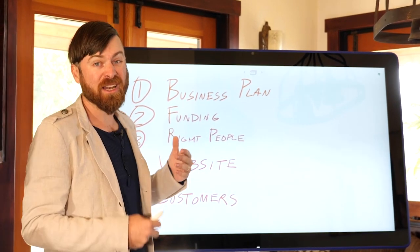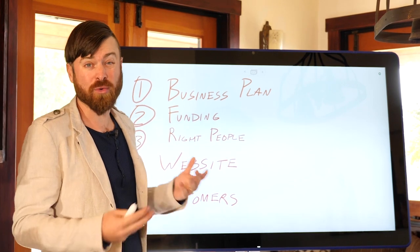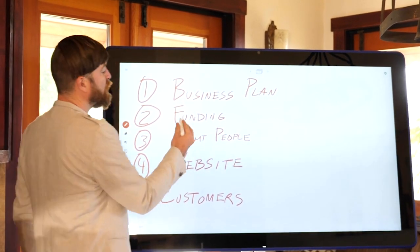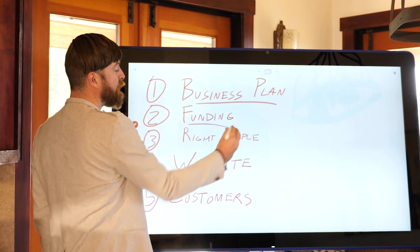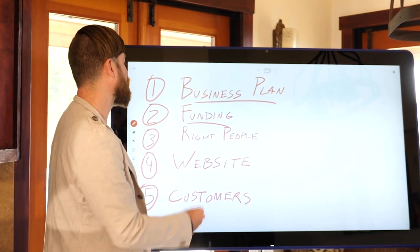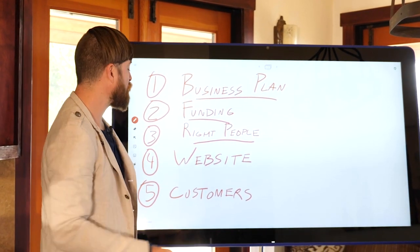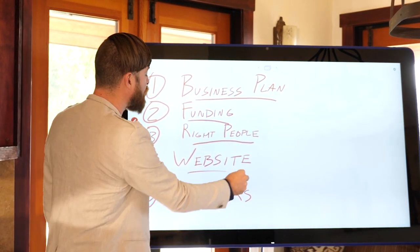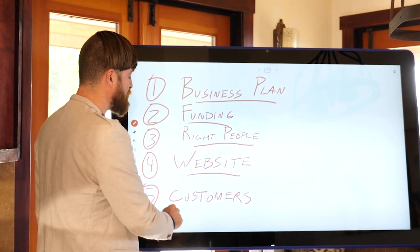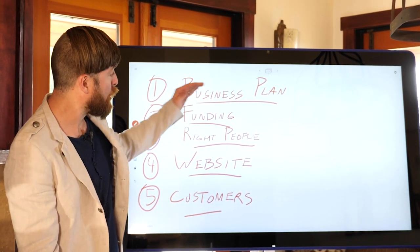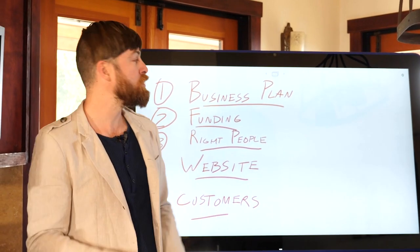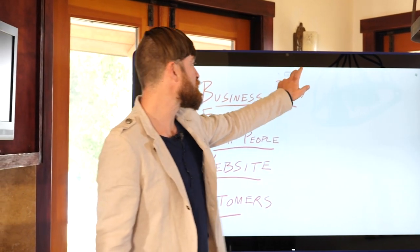The five different things you need to understand to create a startup are: first, you need a business plan; second, you need funding — money has to come from somewhere; third, you need the right people around you; fourth, you need a website, a place to do business; and fifth, you need customers. I'm going to be going over each of these items in detail.